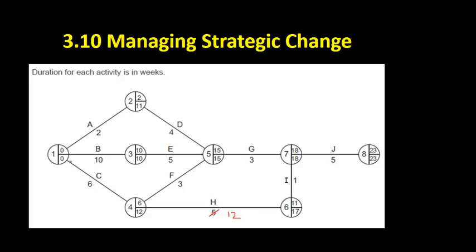So activity C, which is what precedes activity H takes six weeks. So six weeks is the earliest start time. Six plus 12, that's going to alter the earliest start time for activity I because the activity is taking much longer than originally anticipated. So six plus 12 is 18. That is an 18.